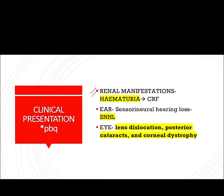There will be renal manifestations in the form of hematuria, because there are defects in the glomerular filtration barrier and glomerular basement membrane, so RBCs will be filtered. Progressively there is sclerosis, which can lead to chronic renal failure and end-stage renal disease. Importantly, in Alport syndrome not only the kidney is affected — the ear and the eye are also affected, because type 4 collagen is present in all three sites.